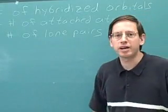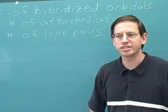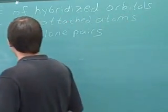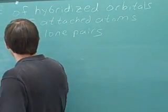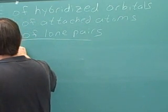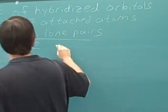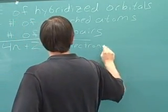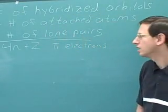I'm going to talk about how to determine whether a molecule is aromatic or not. Hopefully you're familiar with Hückel's rule, which says that in an aromatic compound we should have 4n+2 pi electrons.